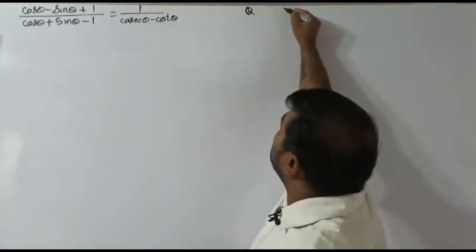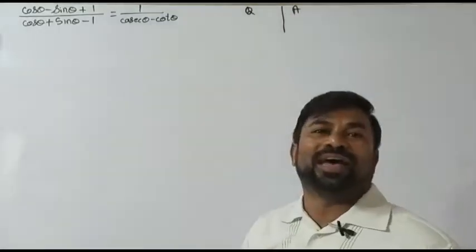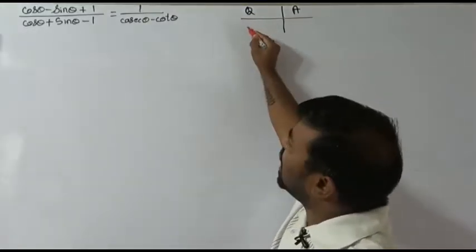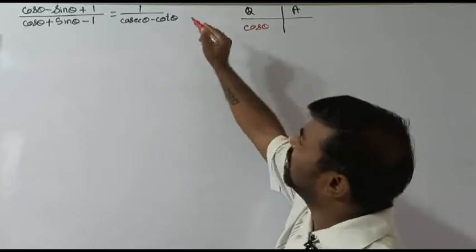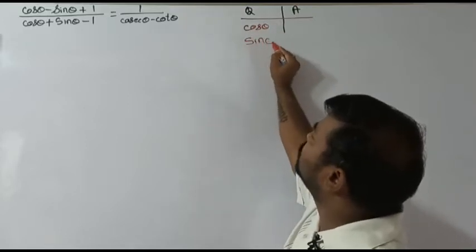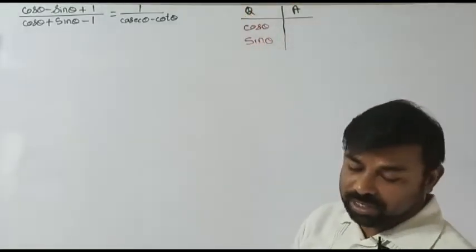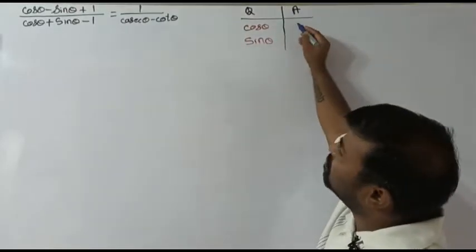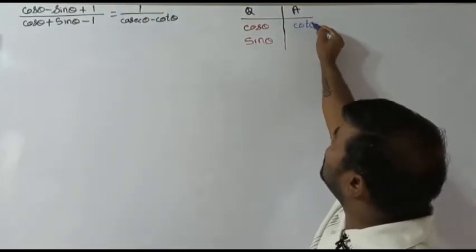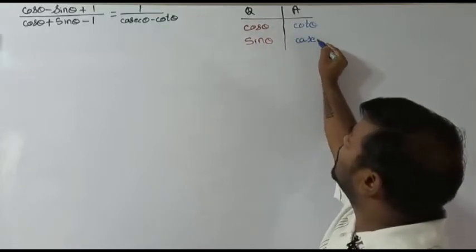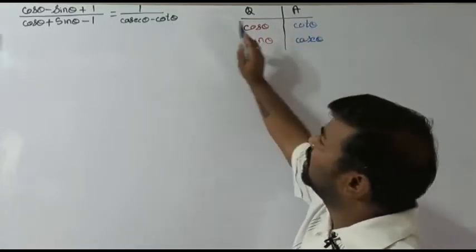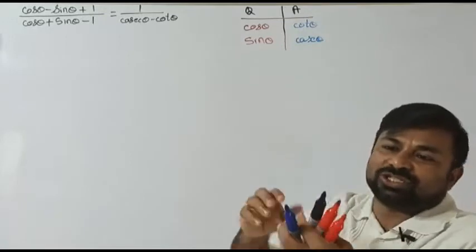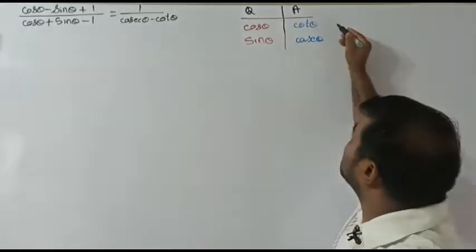So what's the way we are supposed to approach this question? We need to think about what's in the question and what's in the answer. The trig ratios we have in the question are cos and sine. If we check the answer, we are having cot and cosecant. So how do we reach from the question to the answer? That's the beautiful thing we have to understand.